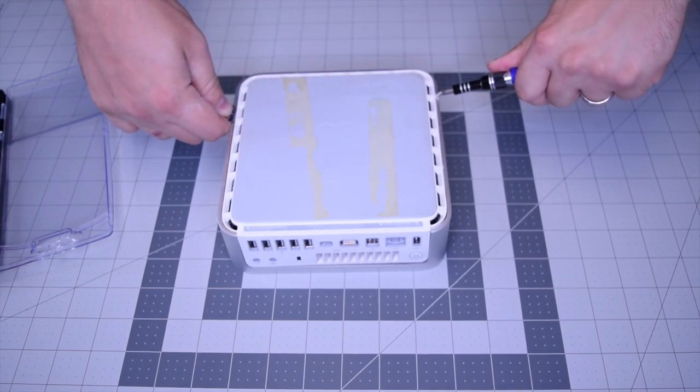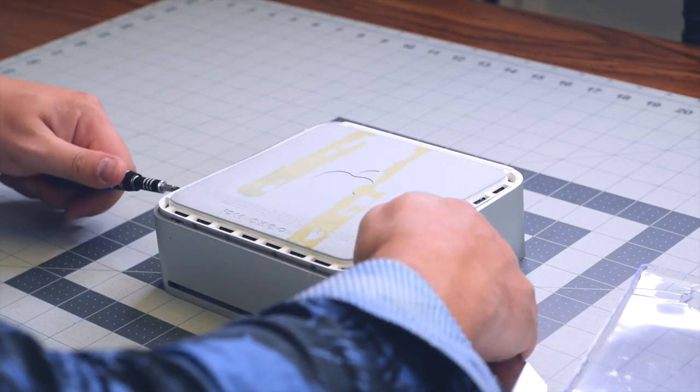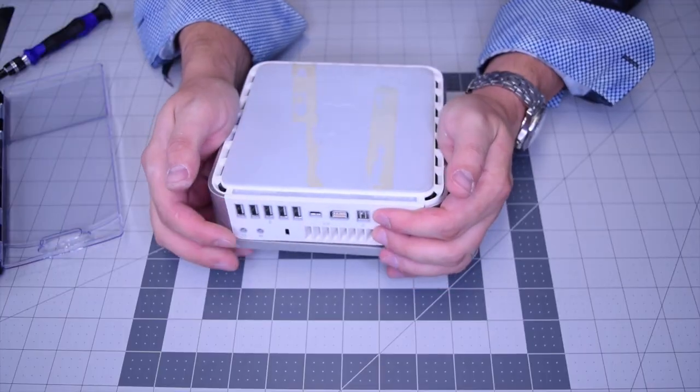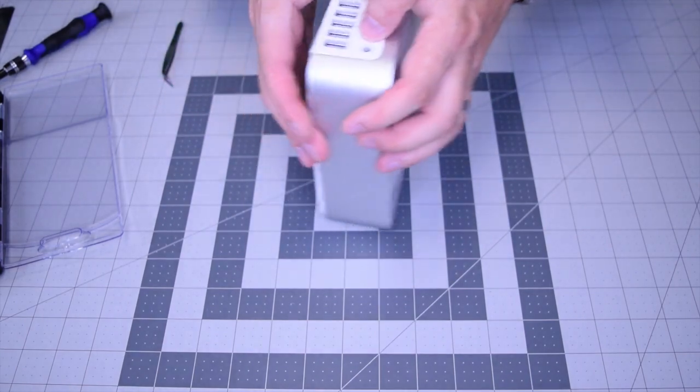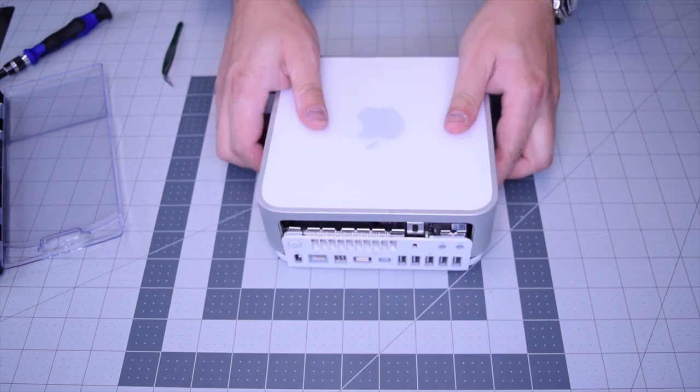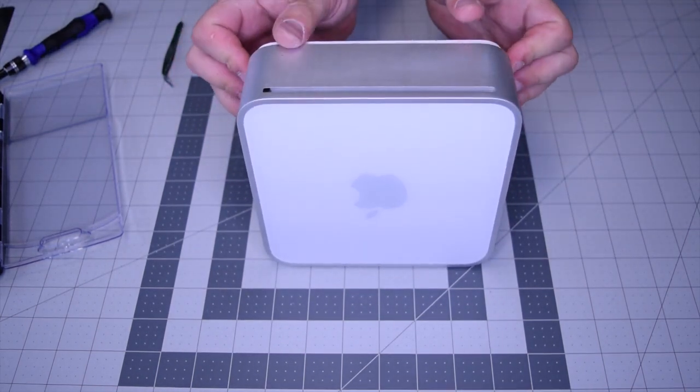Work your way in and apply pressure. We need to kind of bend the case a little bit and push out the frame. Once you have that separation you can just push it apart, and you can see it was being held in by pressure with plastic pieces on all sides.